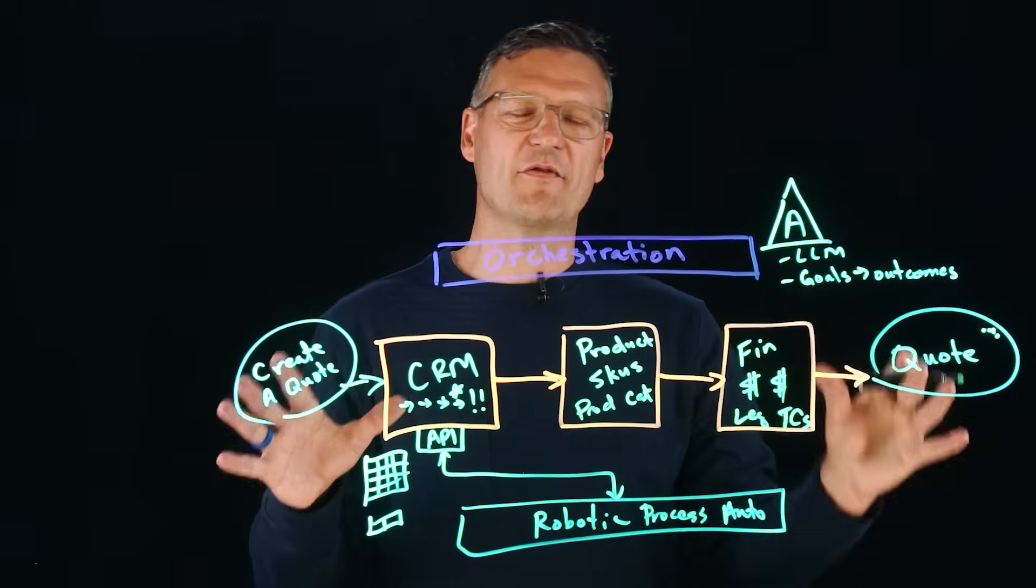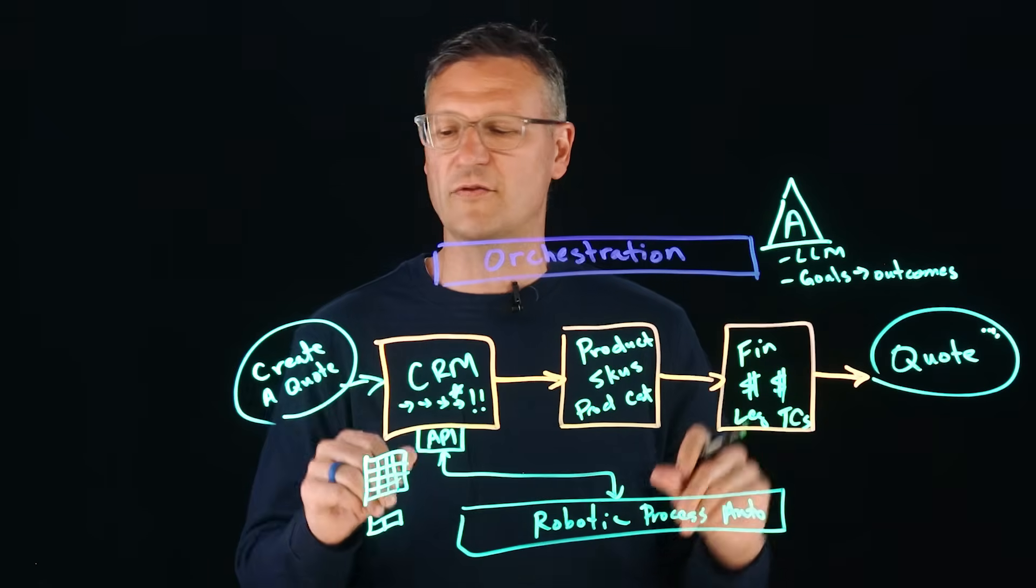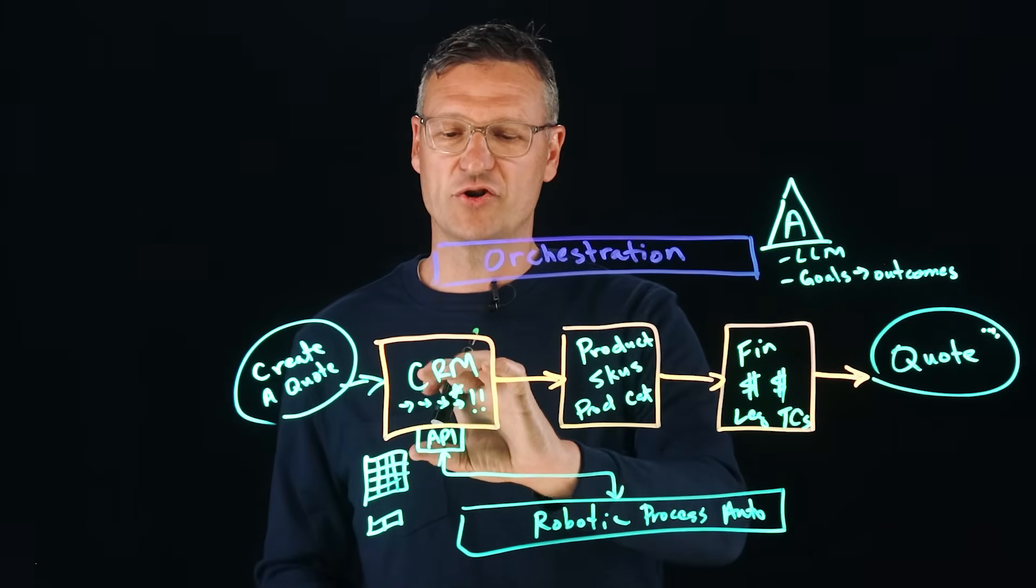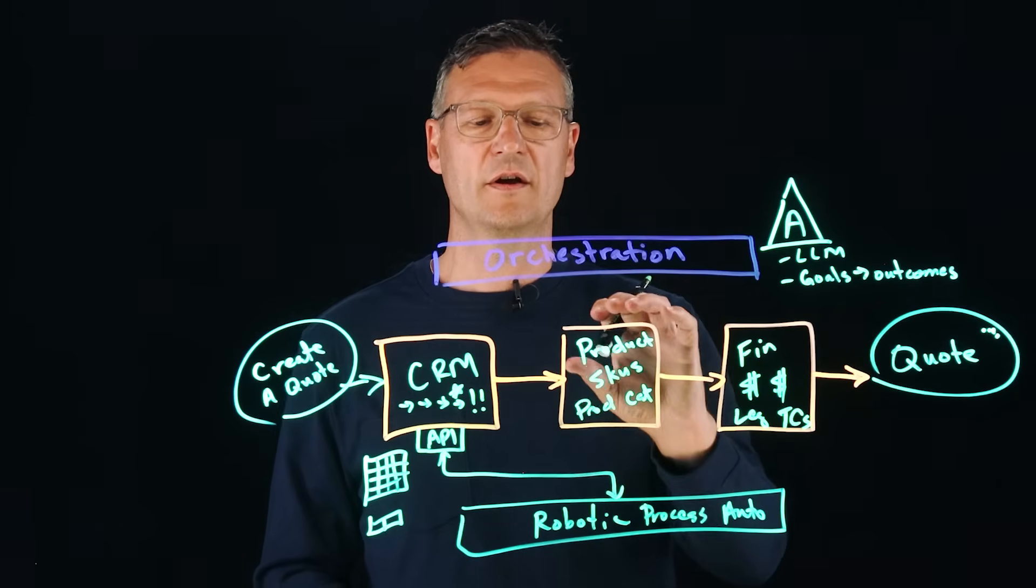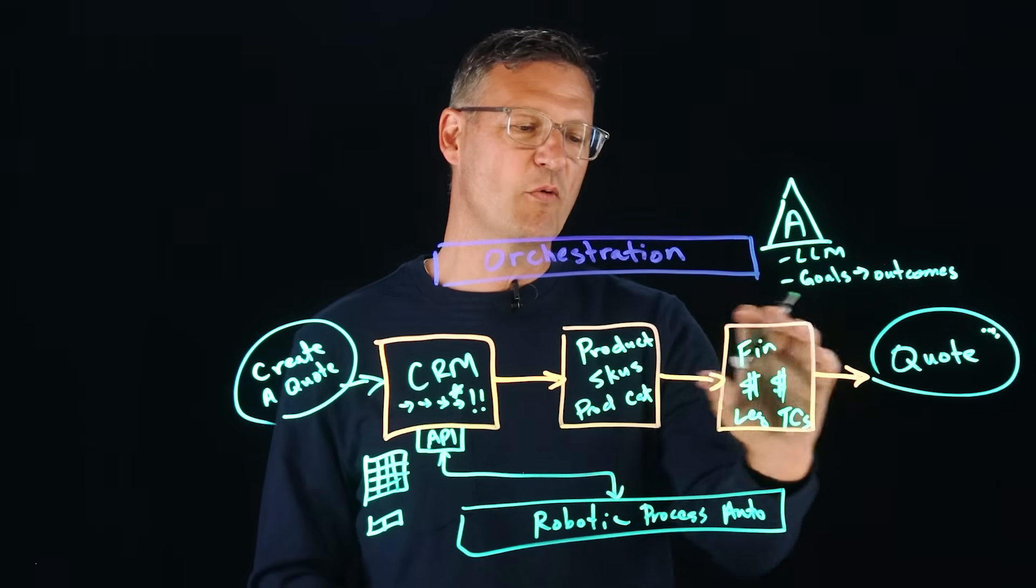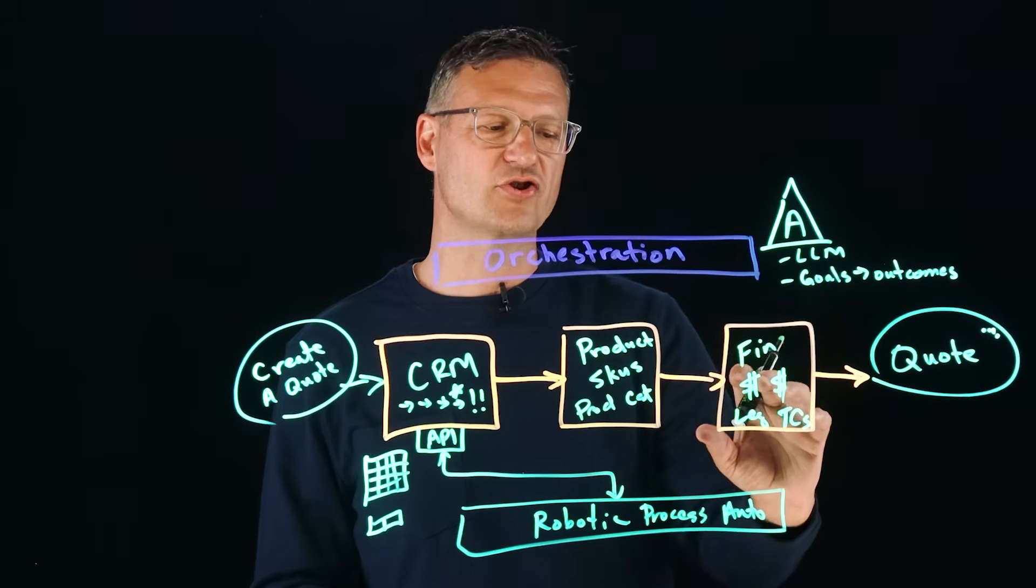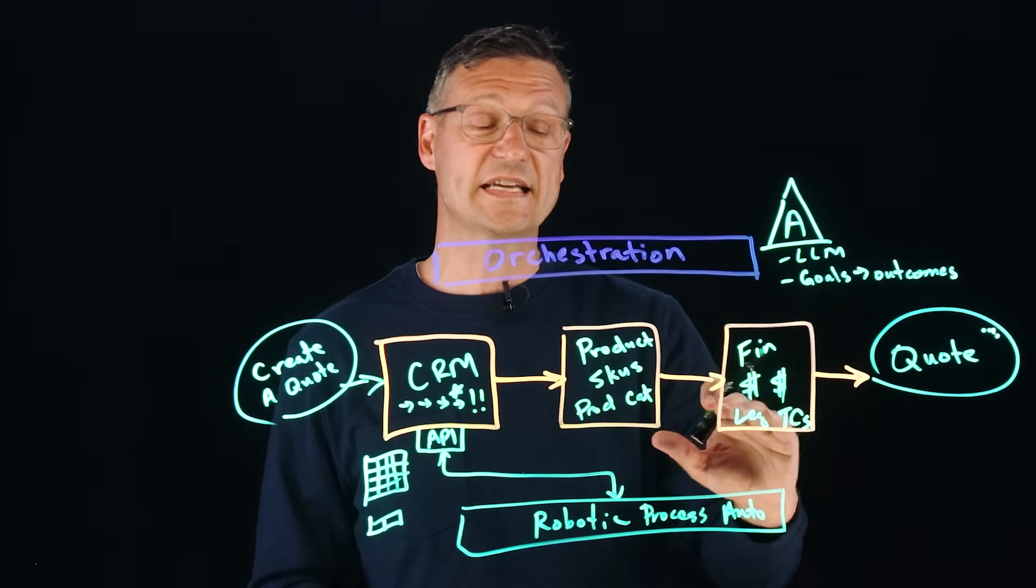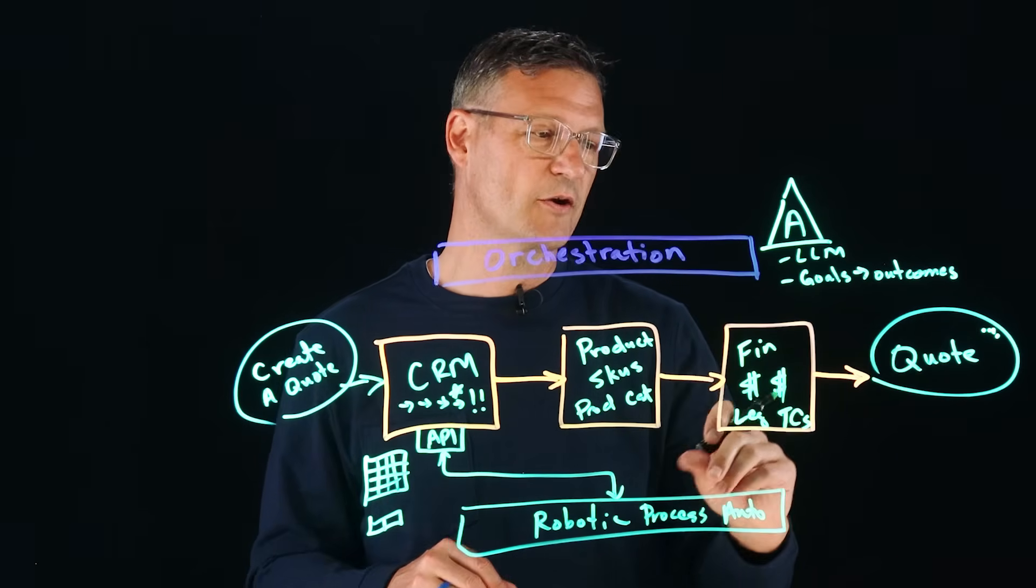And then maybe there's also a legal container or legal information in this container where we kind of know our terms and conditions that we want to attach based on the combination of SKUs that we put together. So this is kind of a very simple cartoon of a process where when we want to create a quote, we want to leverage a CRM application, a data source that has product SKUs and product catalog, and then we want to get into some kind of financial application that can price SKUs and also apply legal terms and conditions based on those SKUs.